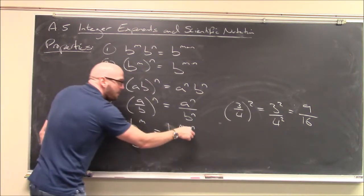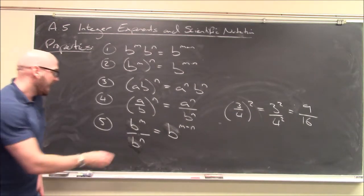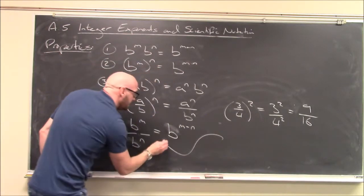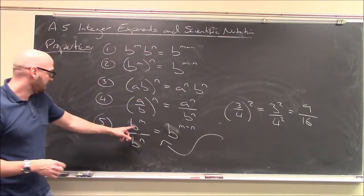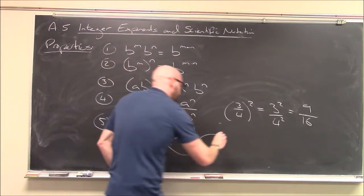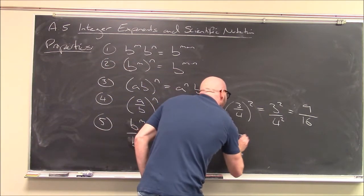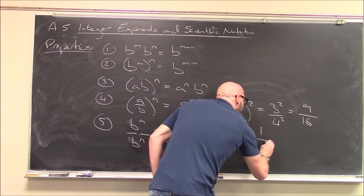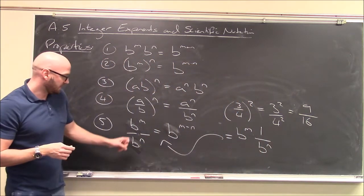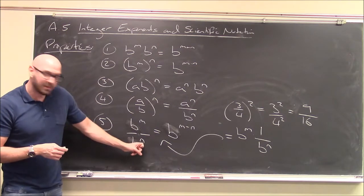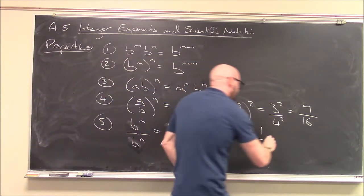And this shouldn't really come as any surprise if you combine everything we already know. b to the m over b to the n, that's b to the m times 1 over b to the n, right? Just think of it like that. b to the m times 1 over b to the n. Well that's of course, b to the m times 1 over b to the n is b to the minus n.